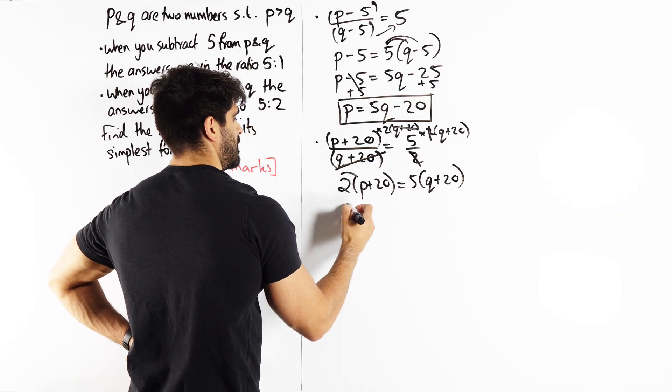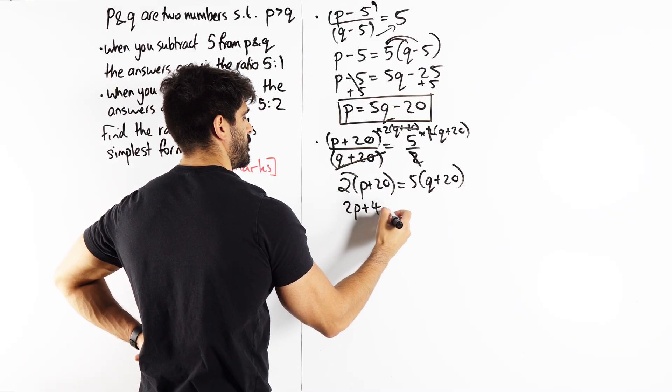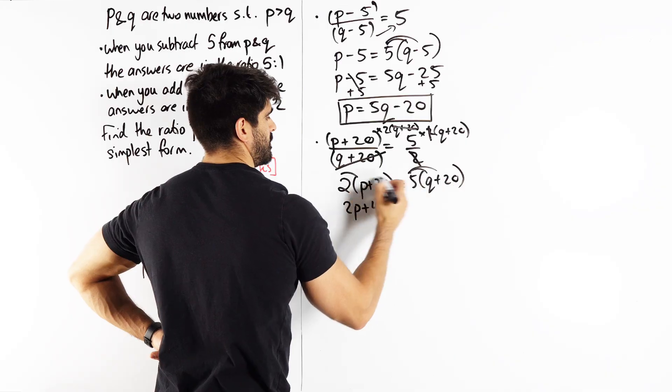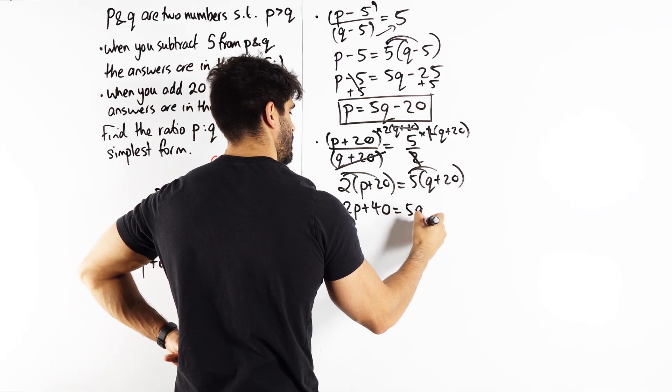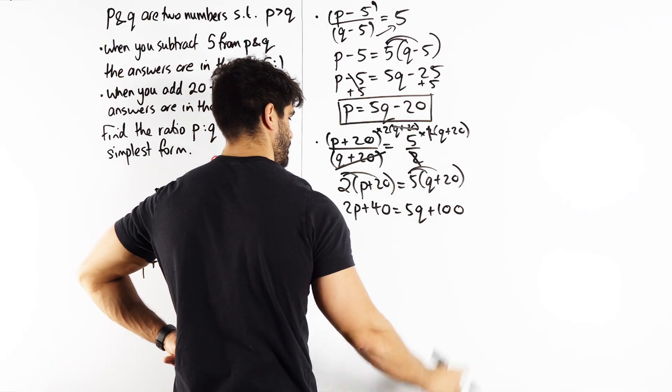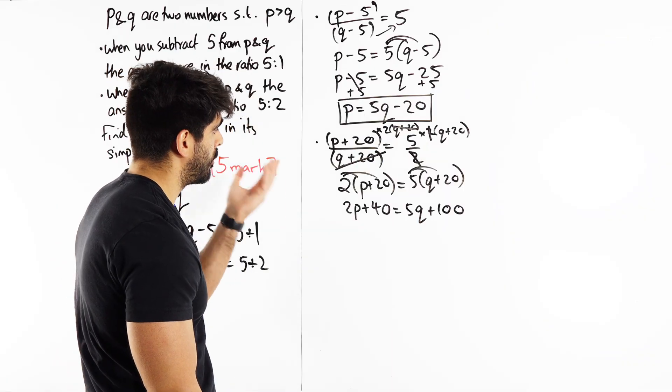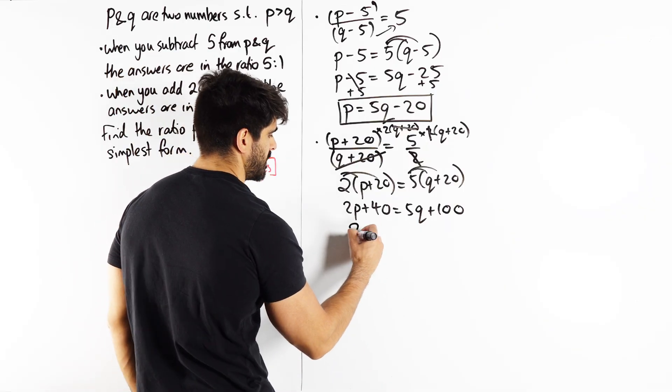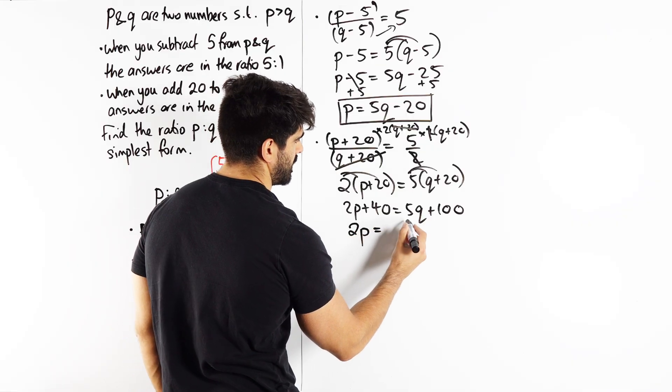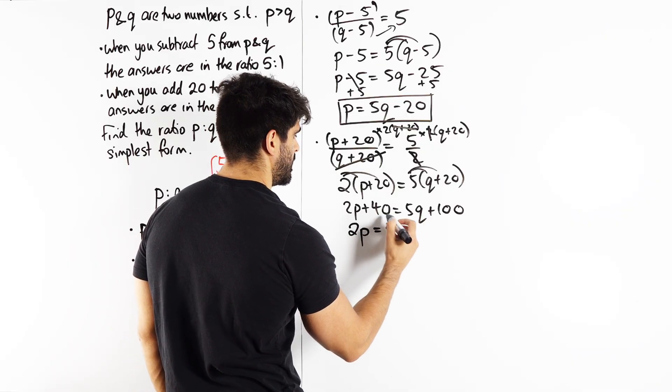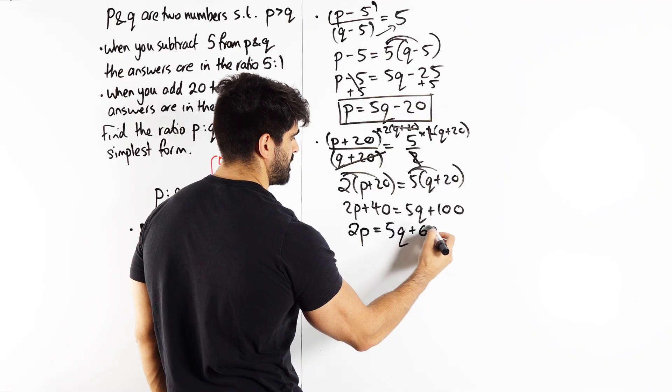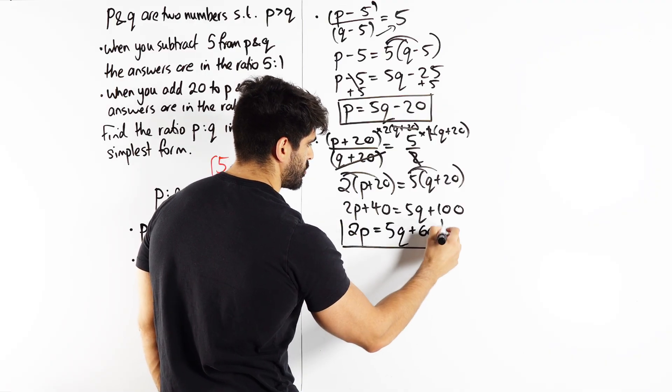So we expand. 2P plus 40 is 5Q plus 100. Now from here, I don't really have a preference as to how I do this. I'm just going to minus the 40. So we have 2P is 5Q, subtracting 40 we get plus 60. Then we might as well do a substitution.